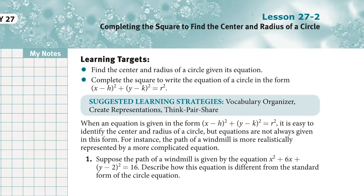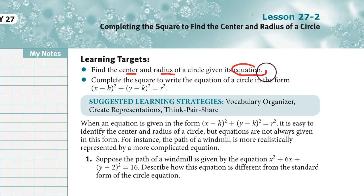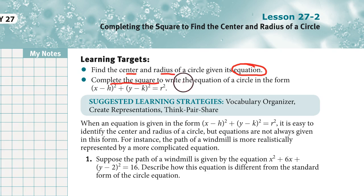This video is for Lesson 27-2: Completing the Square to Find the Center and Radius of a Circle. The learning goals are to find the center and radius of a circle when we know its equation, and when the equation is not in the correct format, to use the algebra process called completing the square to write the equation in the form that we want.